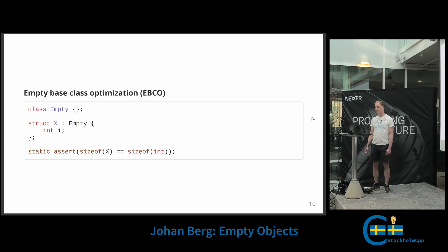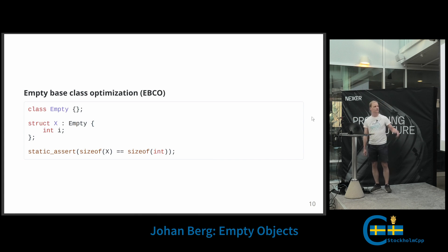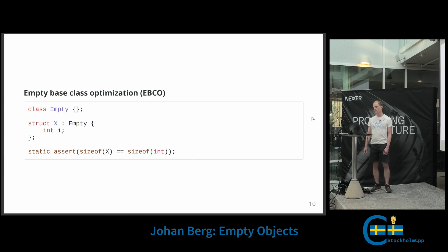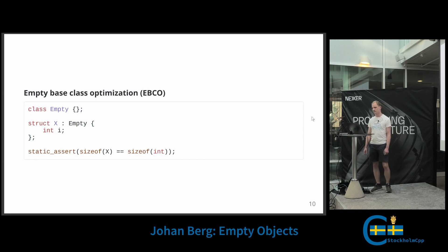So if we have a struct X that holds an integer, instead of storing the empty object as a member, we derive from it. Now the compiler can optimize out the size of the empty object, so the size of X will be the size of an integer.